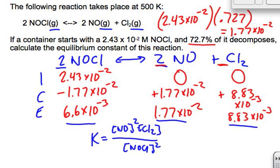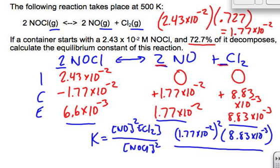NO squared is 1.77 times 10 to the negative 2, times 8.83 times 10 to the negative 3. Cl2 is not squared because its coefficient is 1. Divided by 6.6 times 10 to the negative 3 squared.